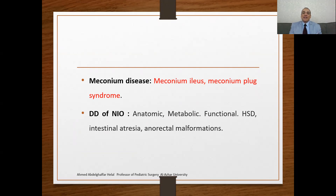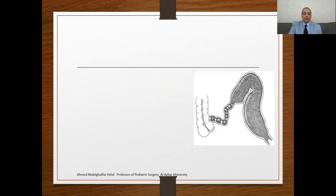The meconium is thick, sticky, adhesive, and inspissated, causing obstruction to the gastrointestinal tract in the neonatal period. The obstructions may be related to anatomical causes, maybe atresia, maybe functional obstructions, or the obstruction may be related to the meconium itself. In all causes of obstruction, there is failure to pass meconium; however, the etiology is different. This is inspissated meconium, or meconium pellets, forming obstruction at the terminal ileum.